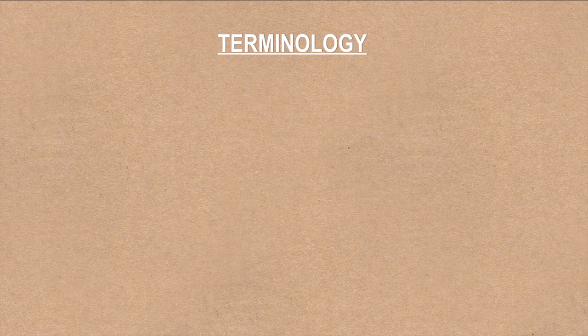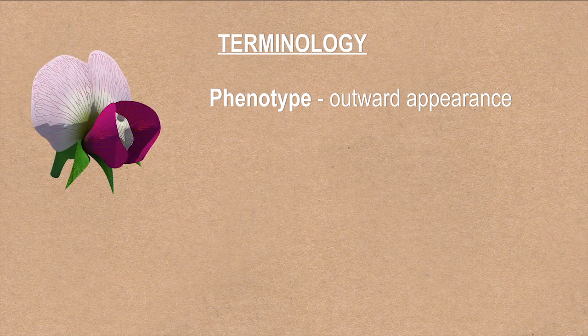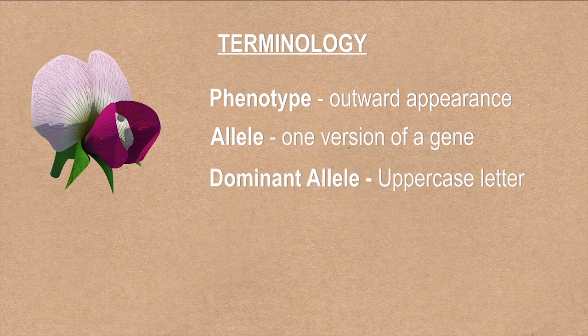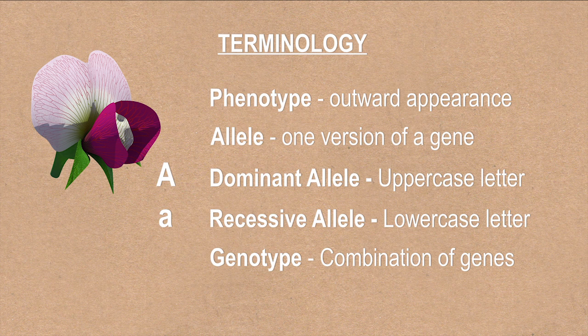Here is some terminology to help us describe these crosses. We call the outward appearance of a trait its phenotype. The phenotype of this flower is purple. Each version of a gene is called an allele. The examples in this video will have two types of alleles: dominant, represented by an uppercase letter, or recessive, represented by a lowercase letter. The combination of alleles an individual carries is called the genotype. Pea plants have two copies of each gene, so the genotype of each trait is represented by two alleles.